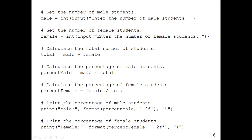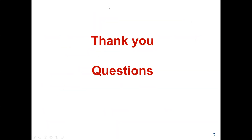Then we print our results, displaying the percentage of males and females, each formatted to two decimal places with a percent sign. For example, if the user enters 20 for male and 30 for female, the total will be 50. Percent male will be 20 over 50, and percent female will be 30 over 50. We print those results. That will be the conclusion of this lab work.